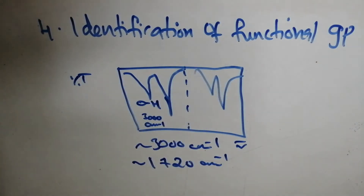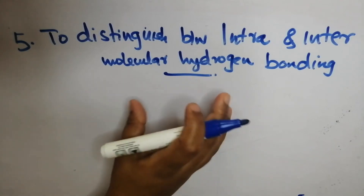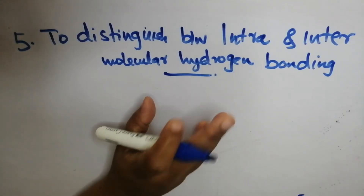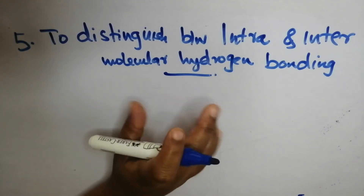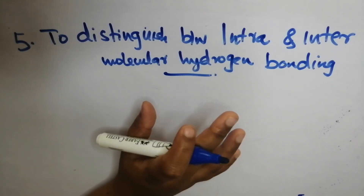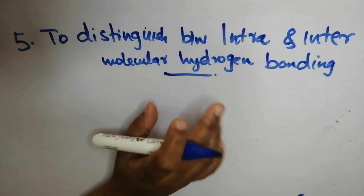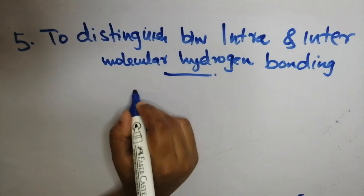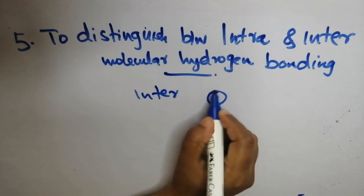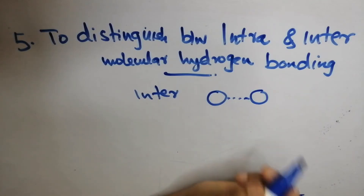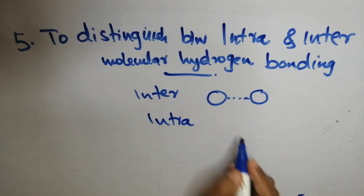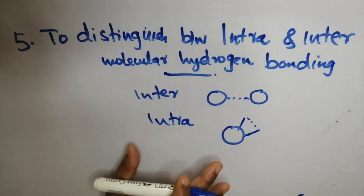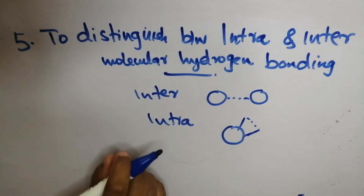The last application is to distinguish between intramolecular and intermolecular hydrogen bonding. This is one of the most important applications of IR spectroscopy. We need to understand what intermolecular hydrogen bonding is — it is hydrogen bonding that occurs between two different molecules — and differentiate it from intramolecular hydrogen bonding using the IR spectrum.